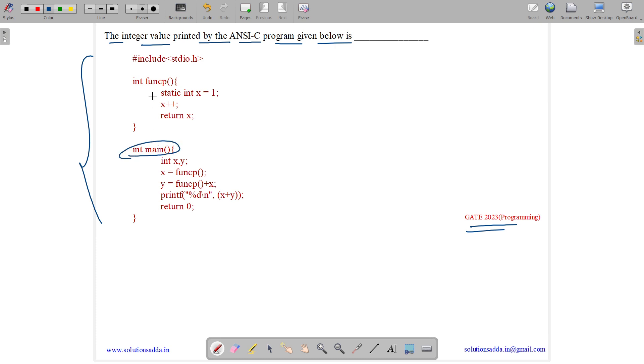So we have a main function and a funcp function. Every time main is called first. Main has two local variables, a variable x and a variable y. x has address 1000, y has address 2000.